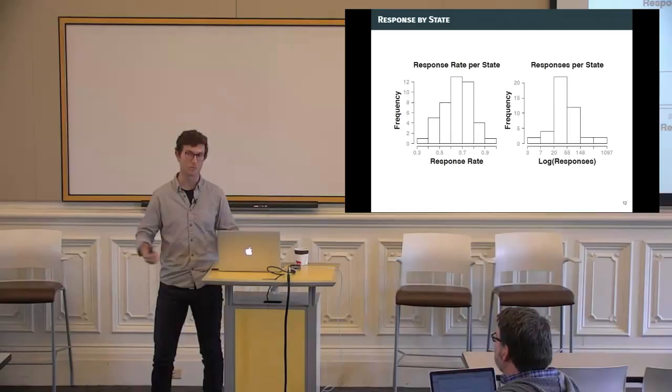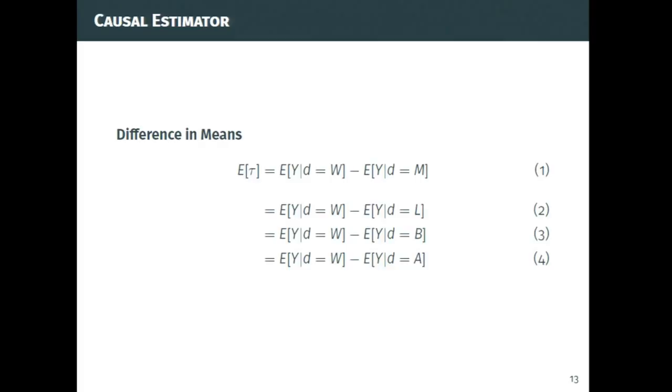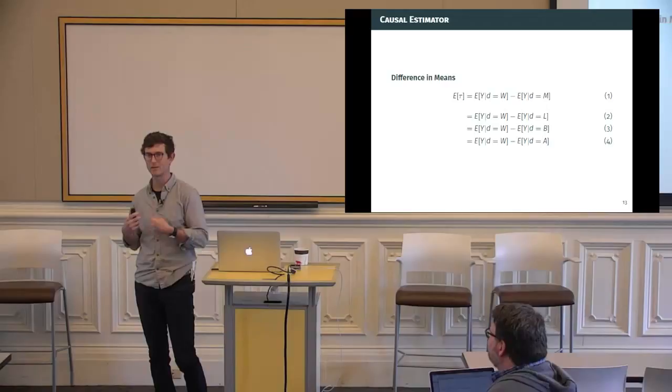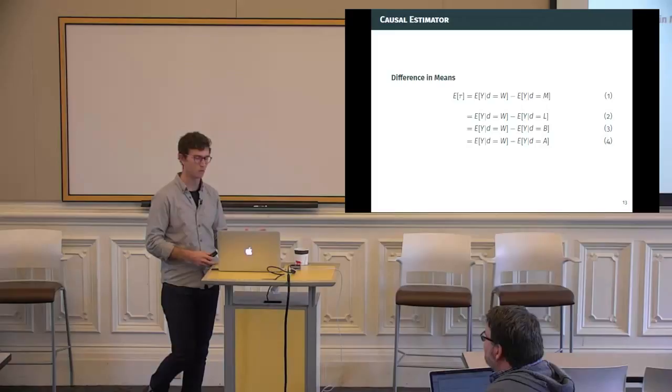Given the setup where we are randomly varying the contact that individuals receive, the estimators of our effect are actually really straightforward. It's just a difference in means and the response rates between the different treatment groups. So we can come up with an estimate for the treatment effect overall of whites versus minorities. This is the average response rate given that you received a white contact versus the average response rate given that you received a minority contact. And this is going to give us causal information. We can break it down further and we can look at whites versus Latinos, whites versus black, and whites versus Arabs in the same way because all of these are randomly assigned.